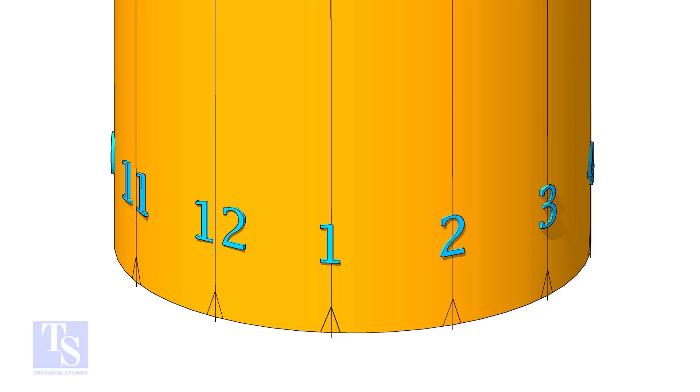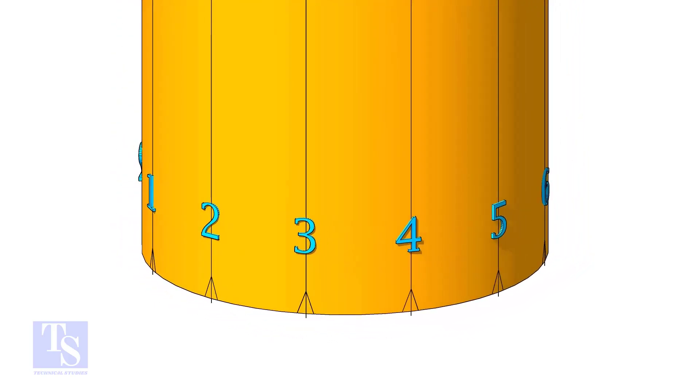Divide the branch pipe into equal parts. In this case, I divide the pipe into 12 parts.